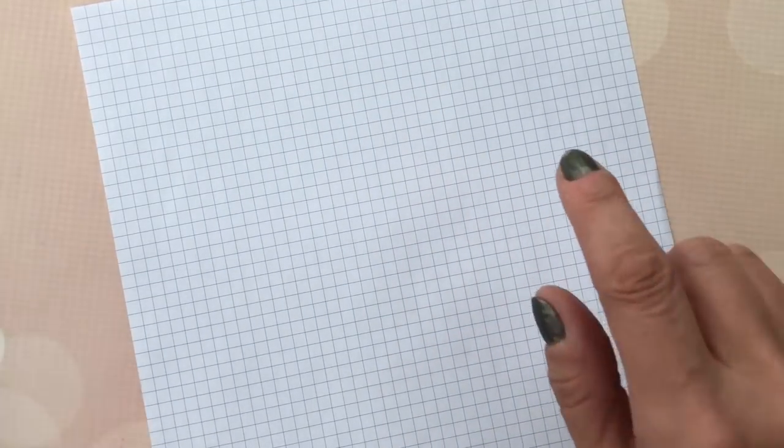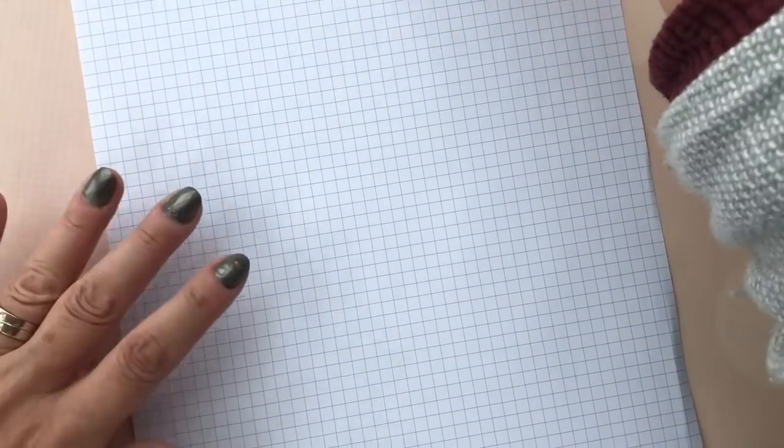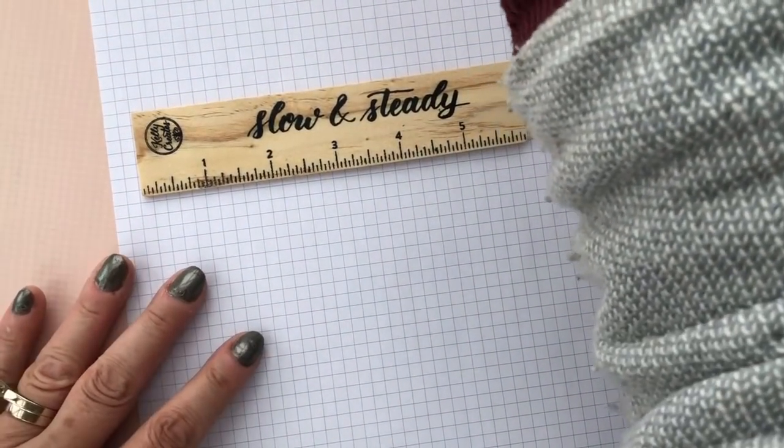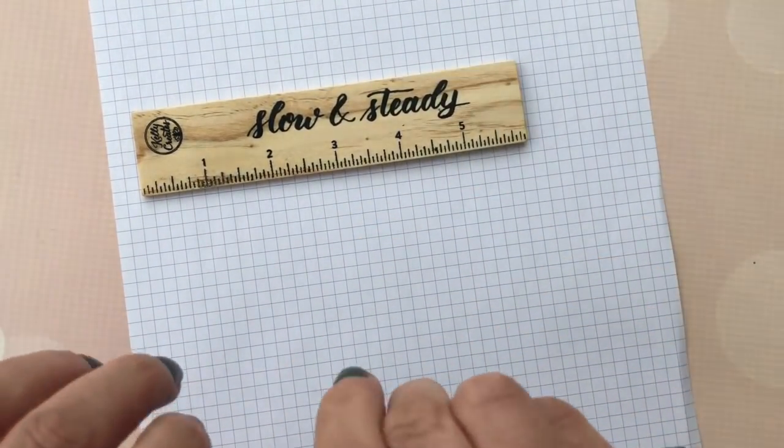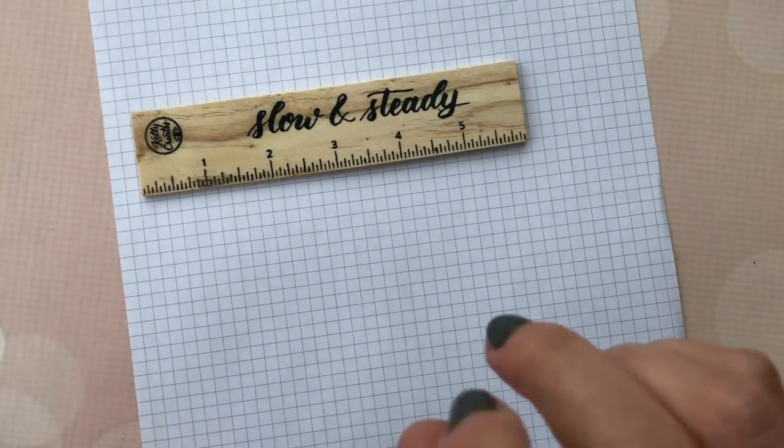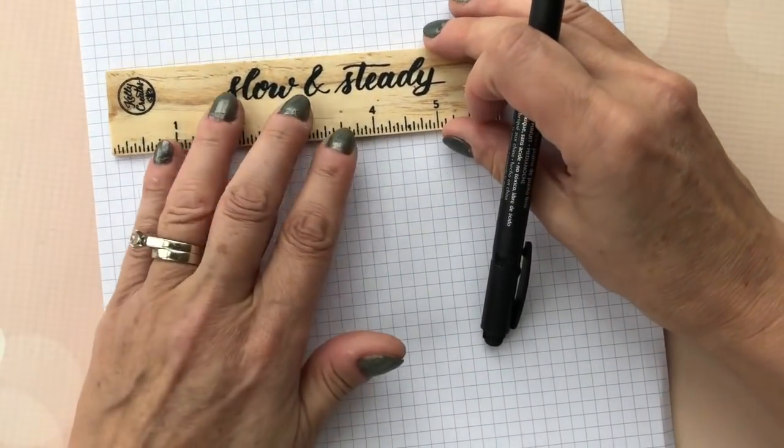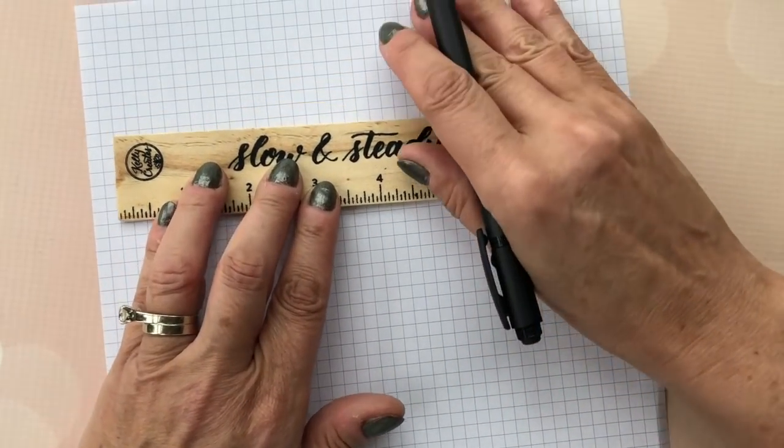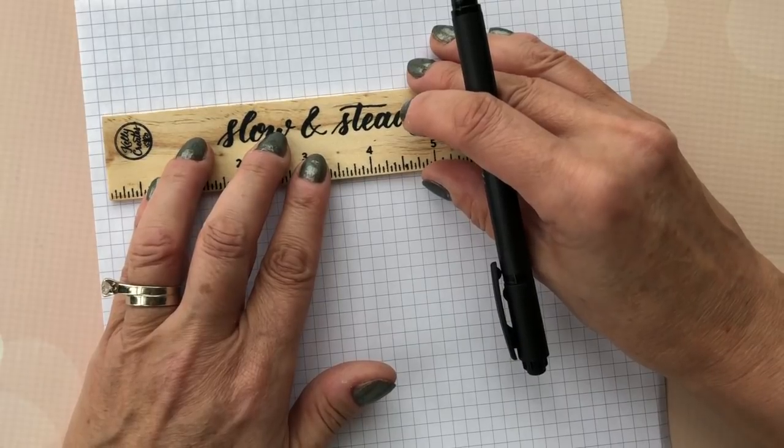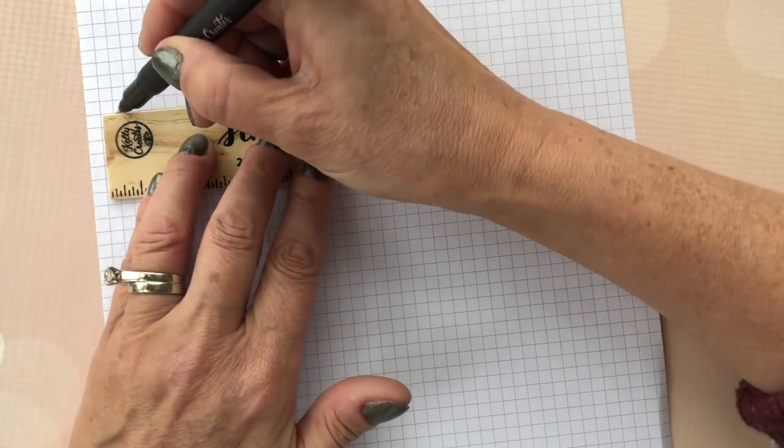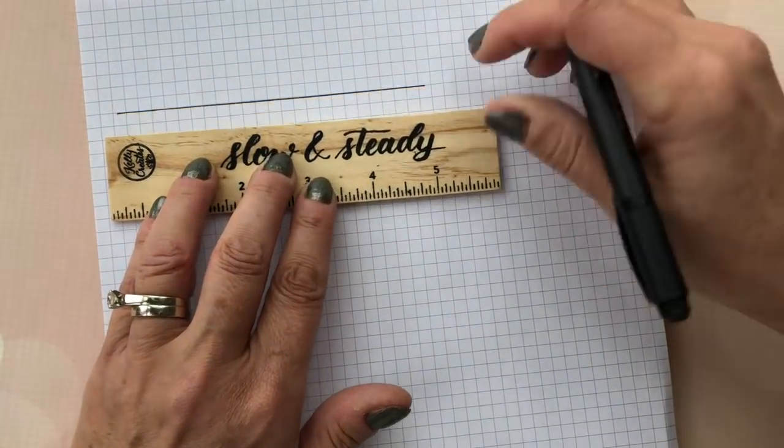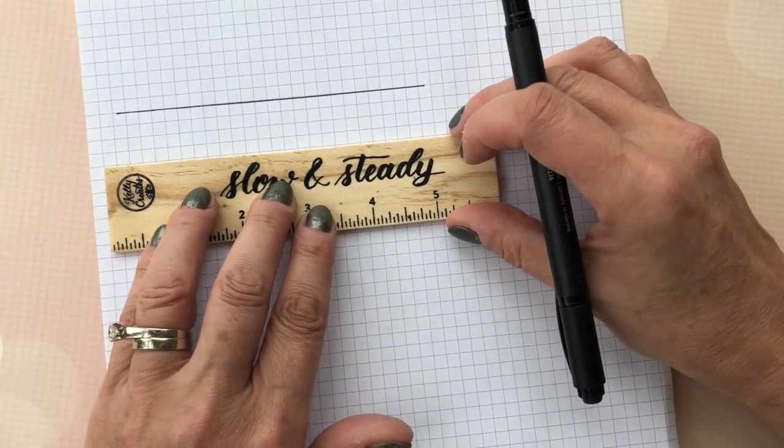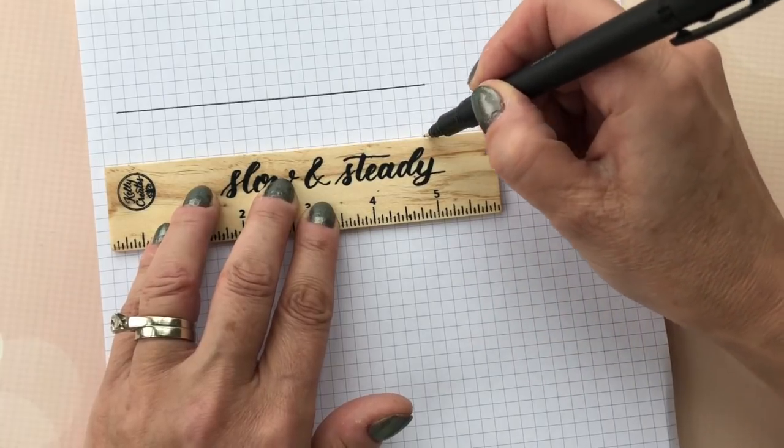Now even though this is a grid, this still isn't good enough for me for guidelines. I will take my pencil and ruler, or you could use a fine liner, and I will mark off the guidelines that I want for my letters. So for a large brush tip pen, I will make my guidelines let's say four squares high.